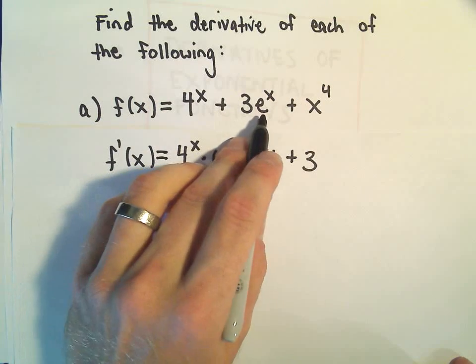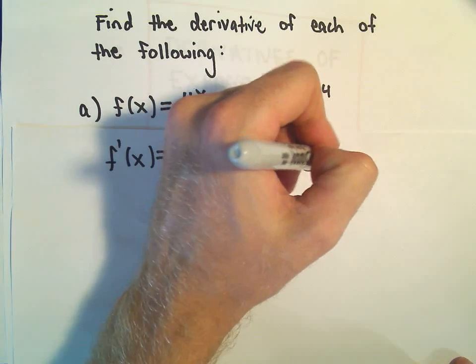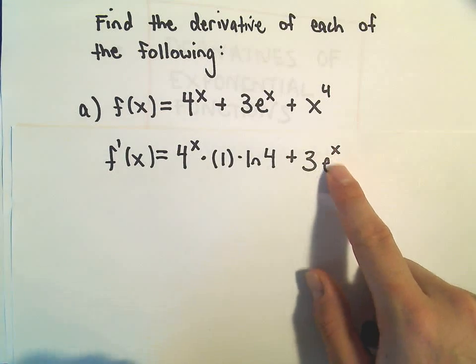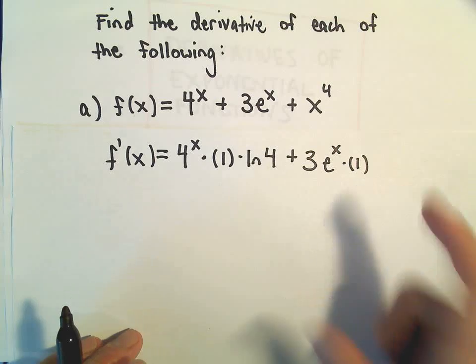So the 3 comes along. The derivative of e to the x, well, it just repeats itself, e to the x. The same thing, when we take the derivative of the exponent, we would just be multiplying by 1.